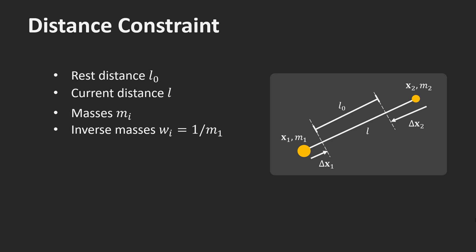To get the physics right, we need to split the correction according to the inverse masses of the particles. Using inverse masses also provides a simple way to handle attachments to fixed objects, by simply setting their inverse mass to zero. In this case, the fixed attachment point won't move at all.